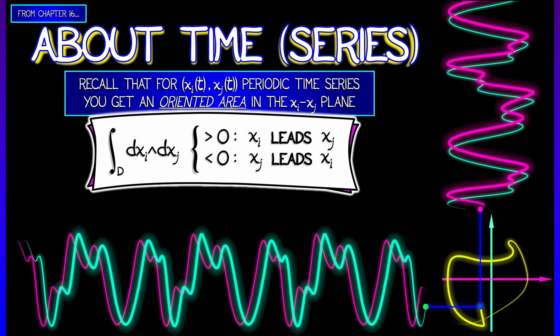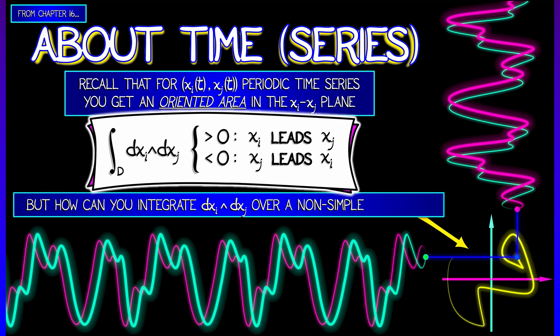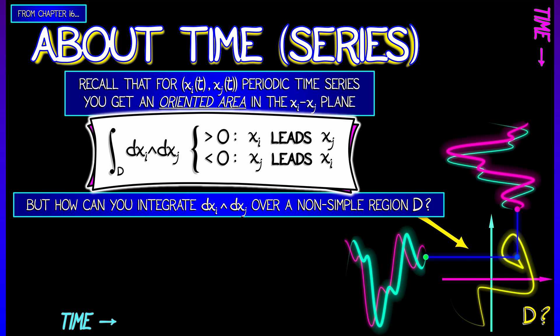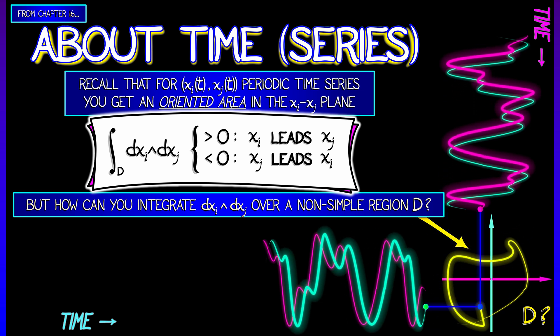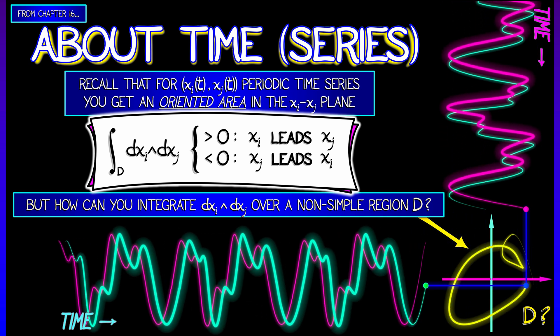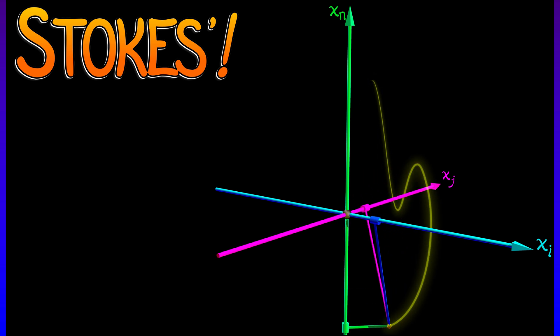When that integral was positive, xi leads xj. When it's negative, xj leads xi. But how do we integrate this when our region in the plane is not so simple? When things are kind of complicated, it's sort of hard to make sense of. I think this is where Stokes' theorem is going to be helpful.